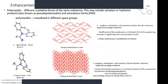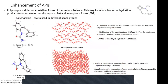The next way to enhance APIs is by looking at polymorphs. Polymorphs are the same substance, the same exact molecule, but crystallized in a different space group. It's the same molecular connectivity — identical molecules — but they've crystallized in a completely different space group. According to the FDA's definition, this includes solvation, hydration products, and amorphous forms.